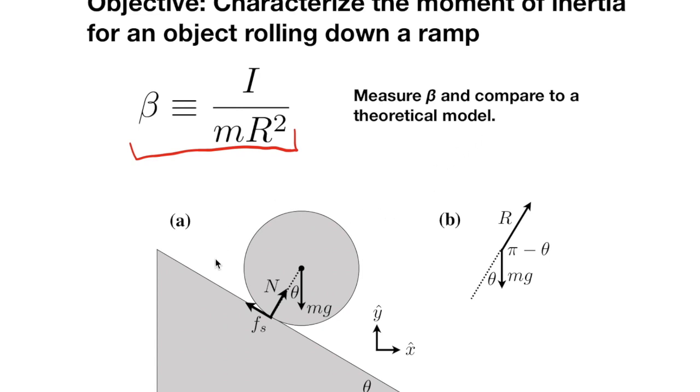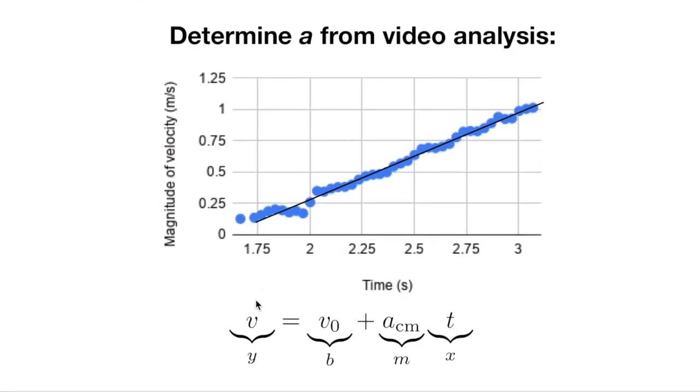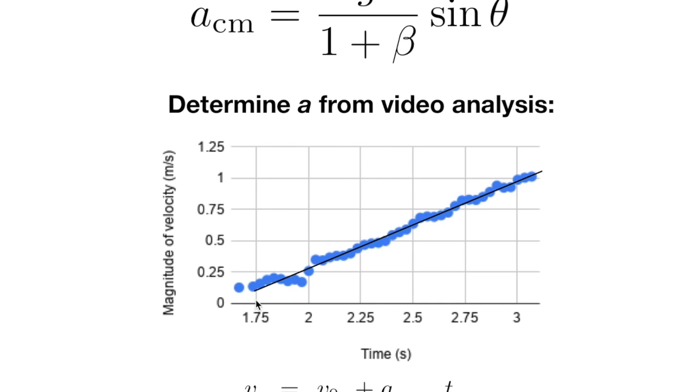In your lab report, or in the lab manual that we're providing, you get a summary of a ball or object rolling down a ramp and the analysis of the acceleration of that object as it's rolling. So you can work through that in your theory to come up with the relationship for the acceleration of the center of mass.